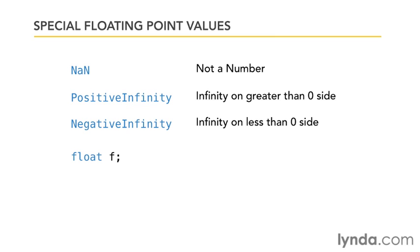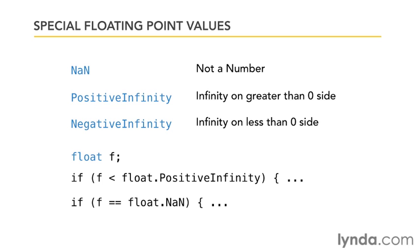There's also a positive infinity and a negative infinity setting. For example, if you have a variable f defined to be of type float, you can do things like say if f is less than float dot positive infinity. You can also check to see if float is equal to not a number.